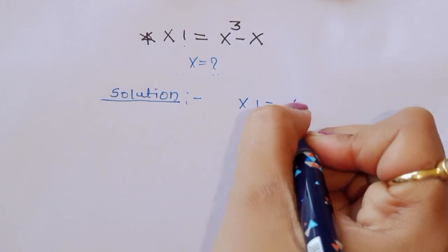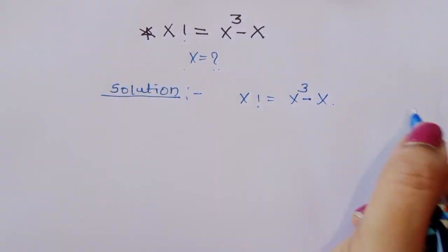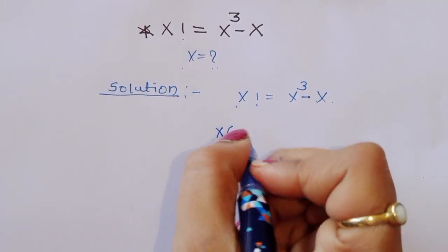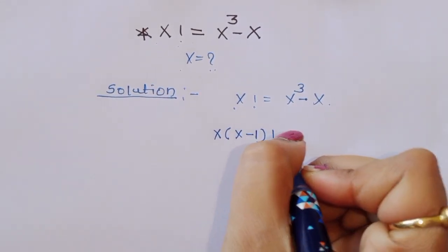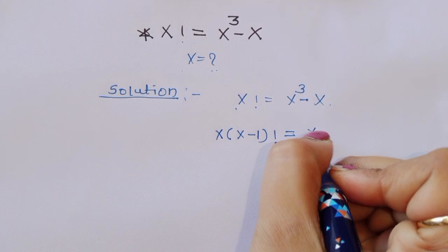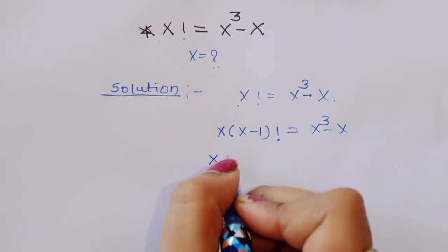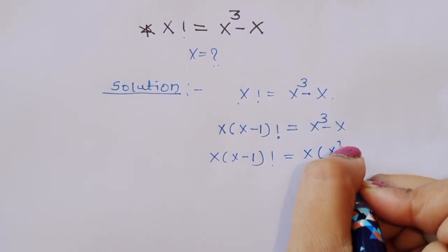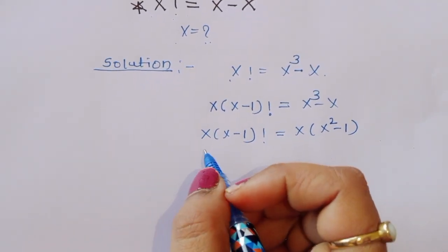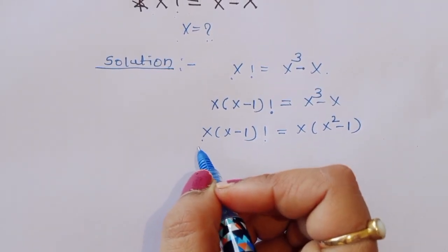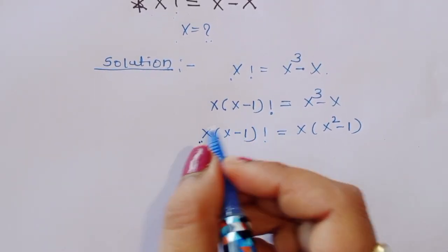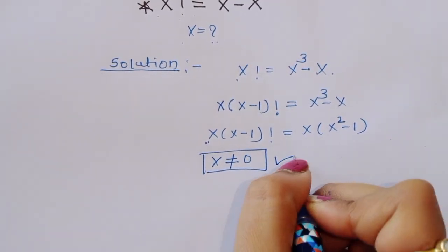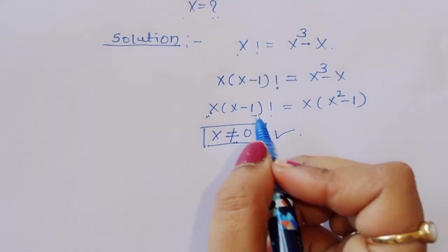Factorial of x equals x cubed minus x. We can write the left side as x times (x minus 1) factorial, and the right side as x times (x squared minus 1), by taking x common. Now we need to divide by x, but we must first check that x is not equal to 0 before doing so.